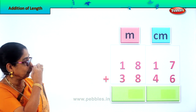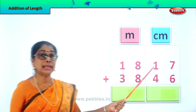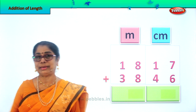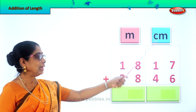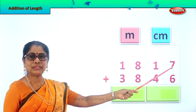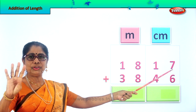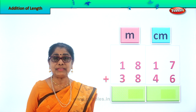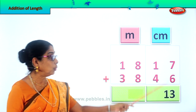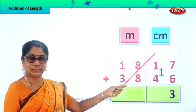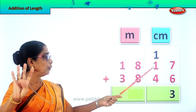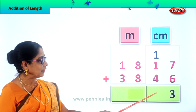Let's look at another new sum. We are given 18 meters and 17 centimeters plus 38 meters and 46 centimeters. Let's add them, centimeters first. 7 plus 6 is 13. We leave the 3 in the 1's place and take 1 ten over to the 10's place. Now we add them: 1 plus 1 is 2, 2 plus 4 is 6. So we write down 6 here — 63 centimeters.